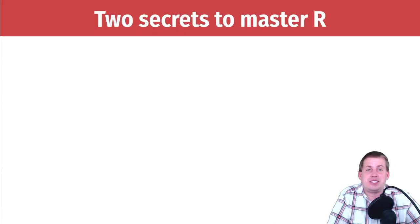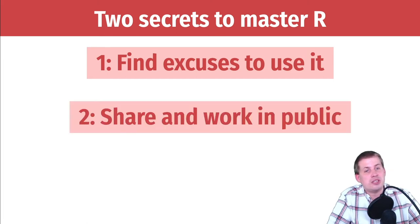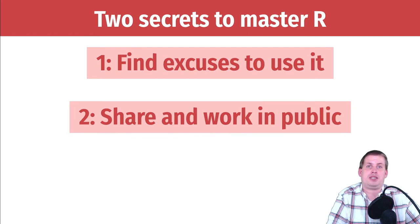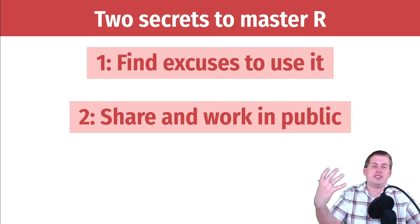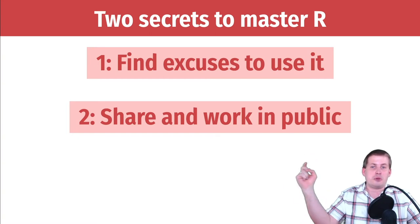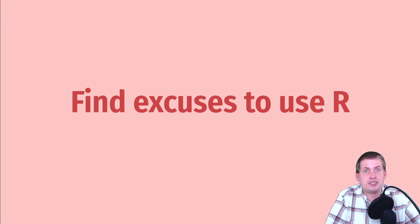In general, if you want to get better at this stuff and continue to learn R, causal inference, and program evaluation, here are my two secrets: find as many excuses as you can to use R, and share your work — do all of your work in public. Perhaps start a blog, perhaps send your results to friends and family and say 'look at this cool thing I made.' There are reasons for working in public, and we'll talk about each of these two secrets right now.